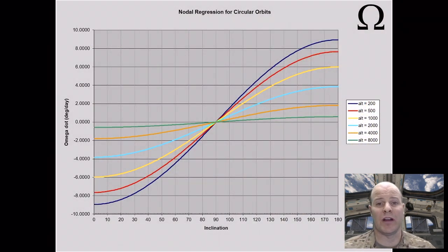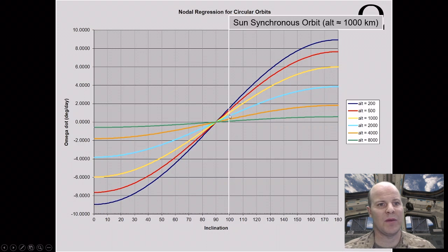Here's a chart of what that nodal regression rate would look like for various altitudes and inclinations. Our sun-synchronous, we want it to be approximately one degree per day. So if we were looking at a satellite that had a thousand kilometer altitude, that would be approximately right here on this yellow line, we could draw that over. So that's essentially what we would get for free.